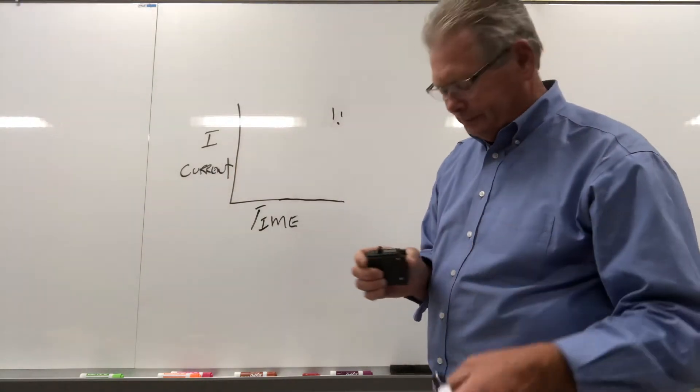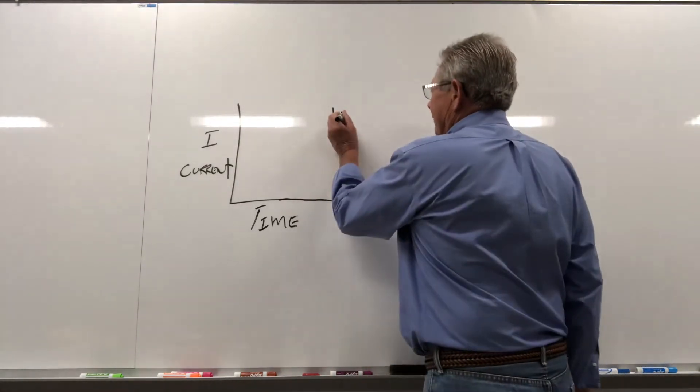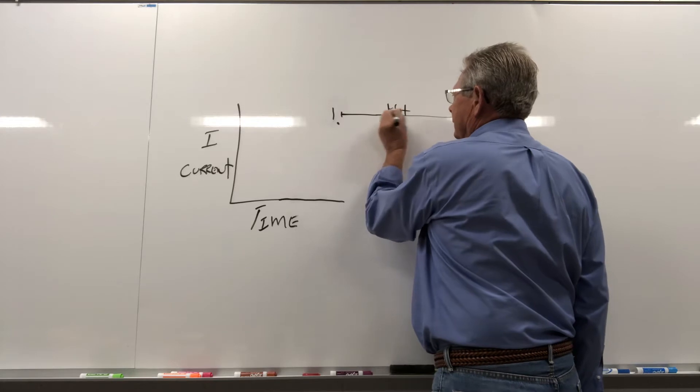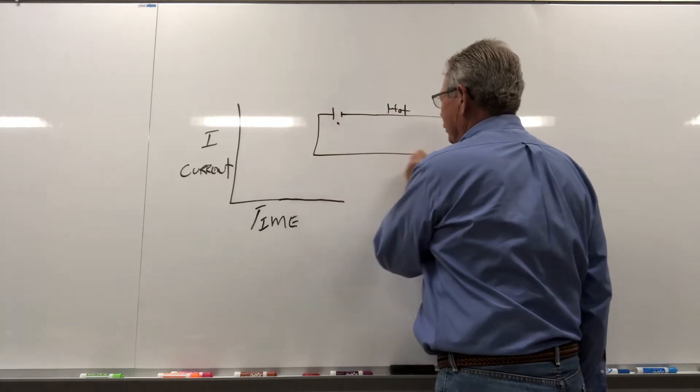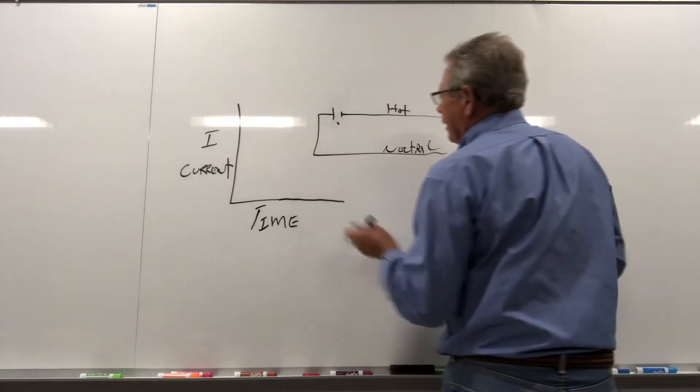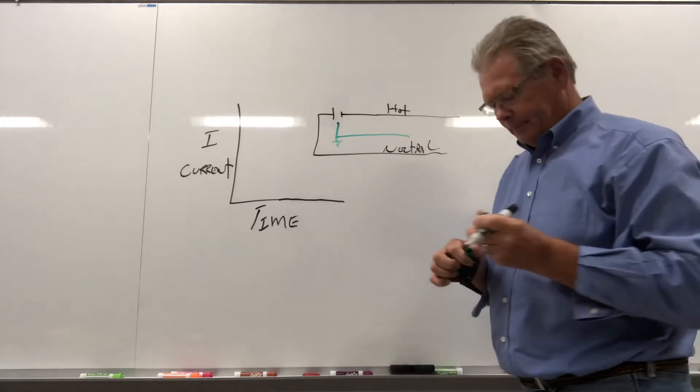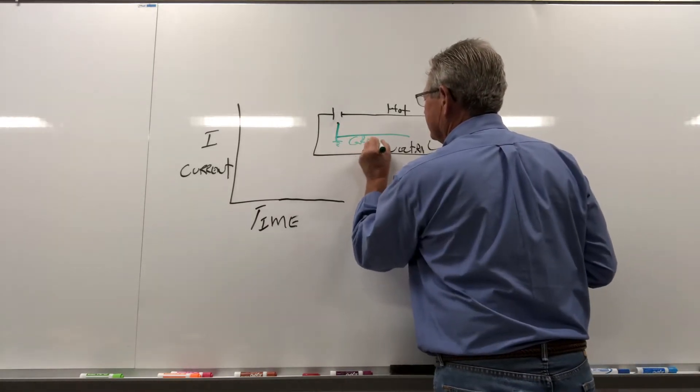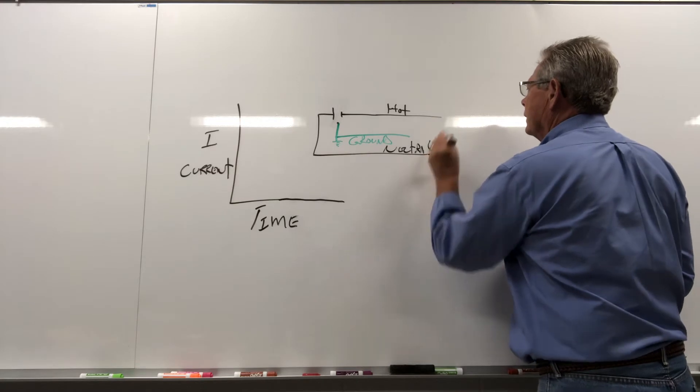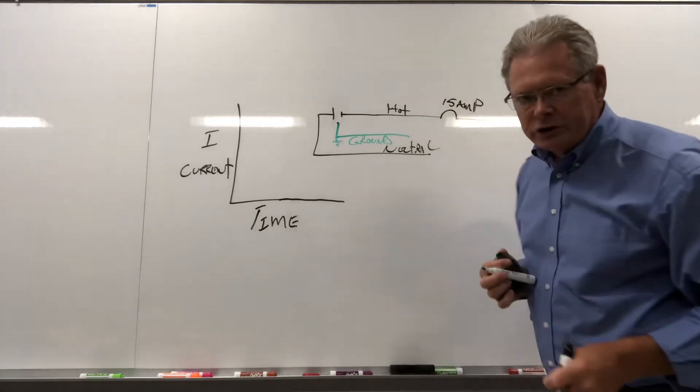Okay, so now let's talk about conditions. Whenever you reset this breaker, it goes pow. You have a short. So we have a 120-volt receptacle here. This is our hot. This is our neutral. And here's our ground. Now, I'm going to draw a ground symbol there. Right over here, we have 15-amp inverse time circuit breaker.